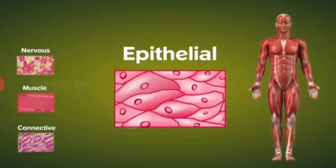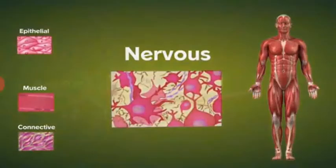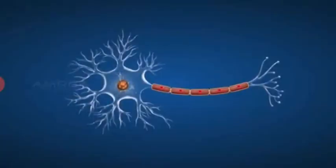The next tissue type is nervous tissue, which consists of a nerve cell or neuron that has a cell body containing the nucleus.